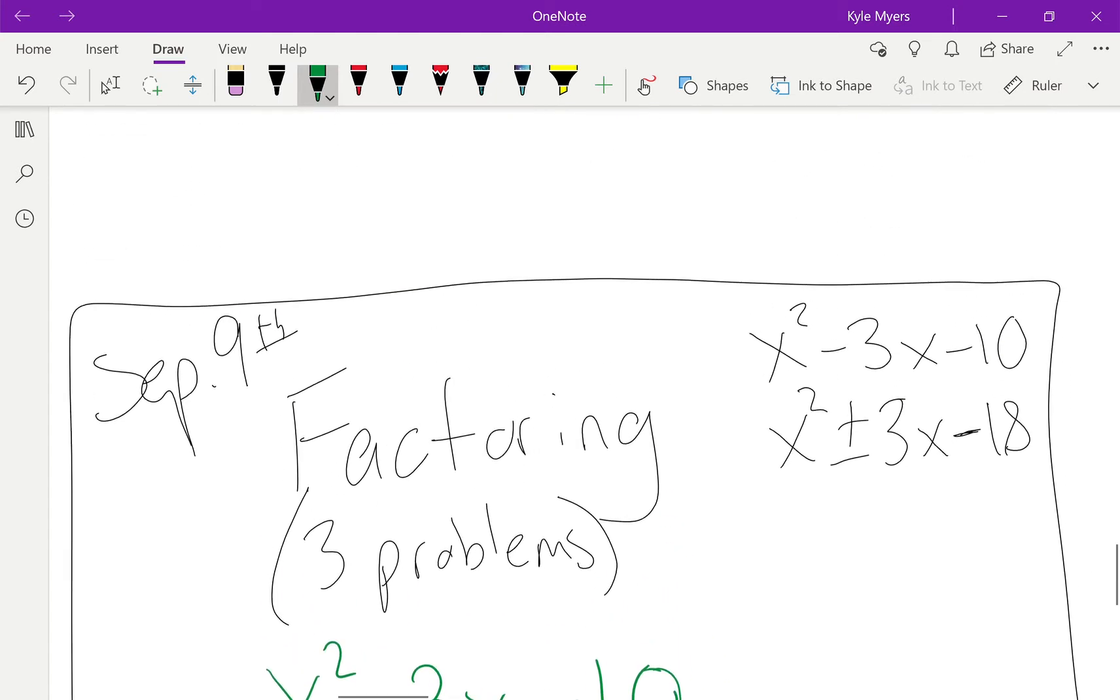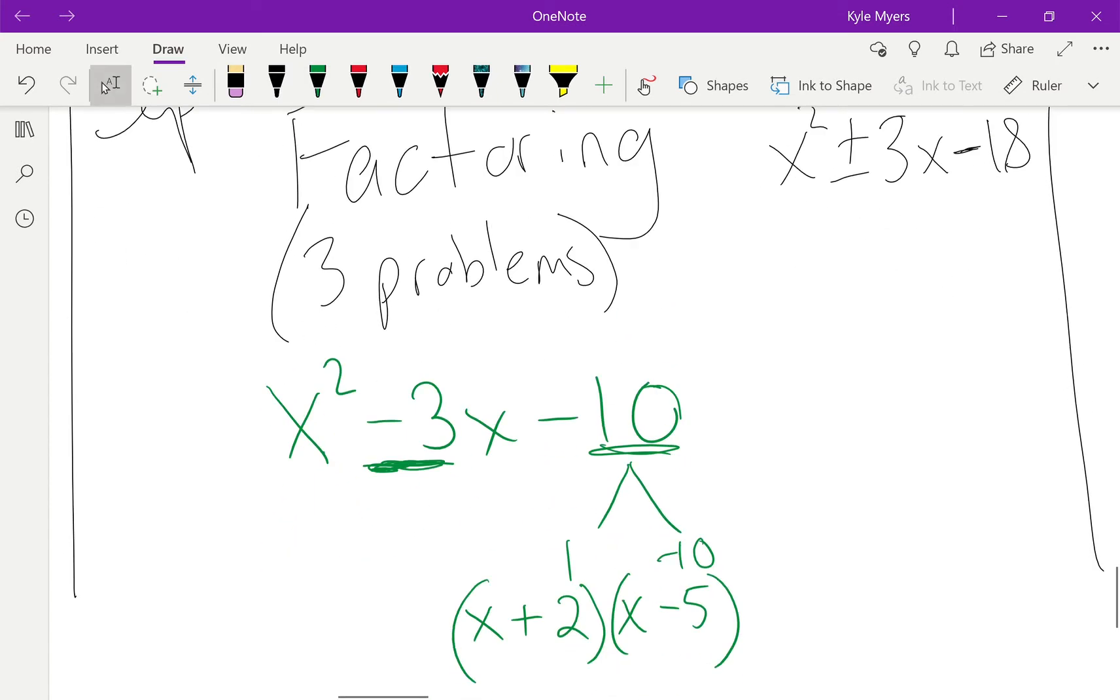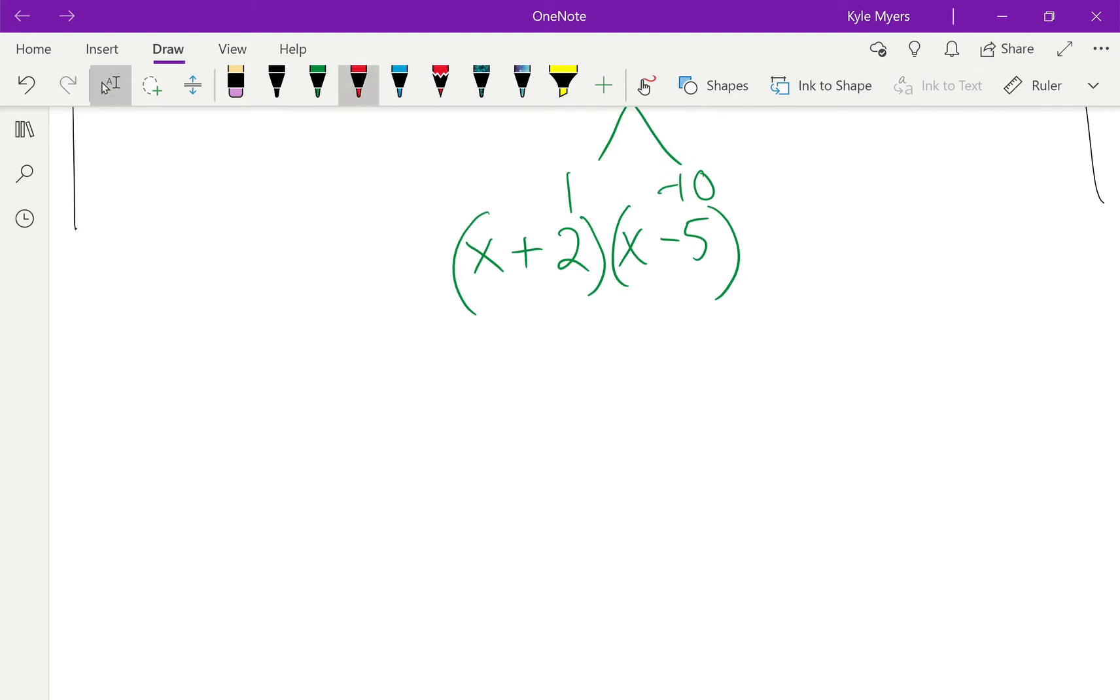Next, we have x squared plus 3x minus 18. Change my pen here. x squared plus 3x minus 18. So I want two things that multiply to give me 18. So there's a couple different things that multiply to give you 18. You have 1 and 18, but again, we want to subtract and get 3.